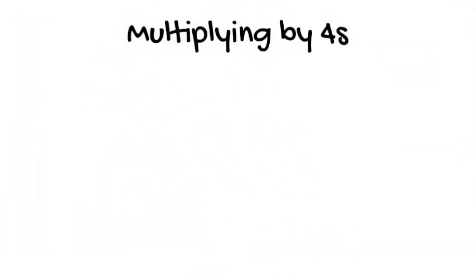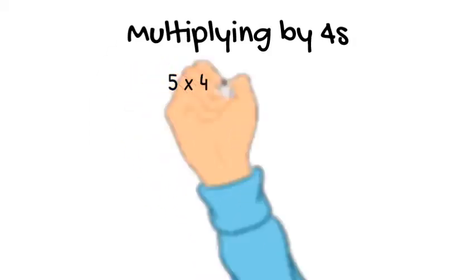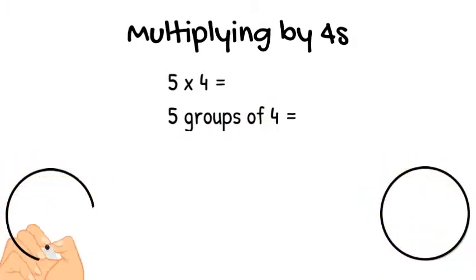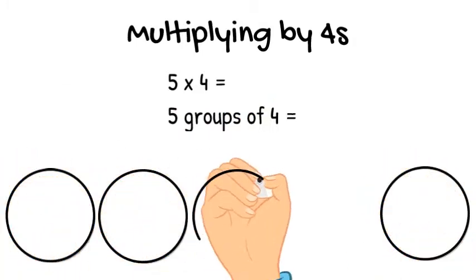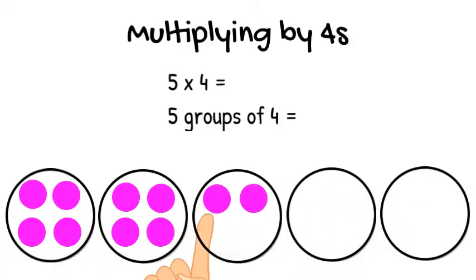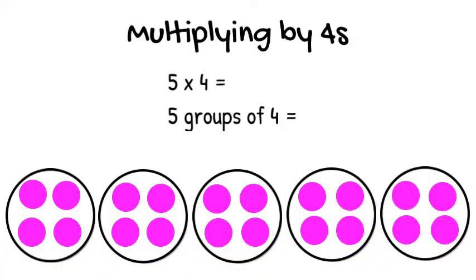Now let's try the same strategy with multiplying by fours. We'll try five times four, or five groups of four. So underneath, the problem says to draw five groups. So we'll have five circles underneath. It also says we need four smaller circles in each big circle.